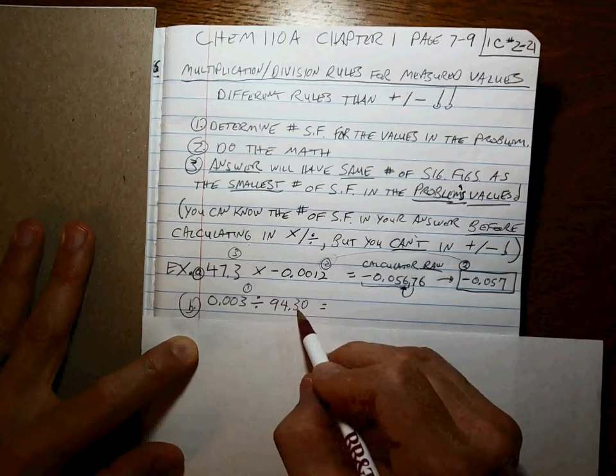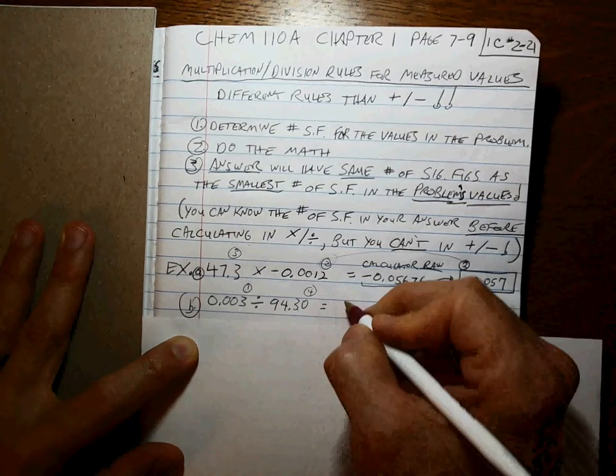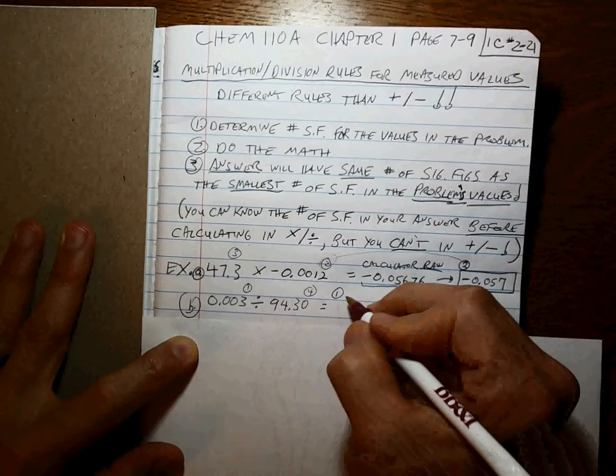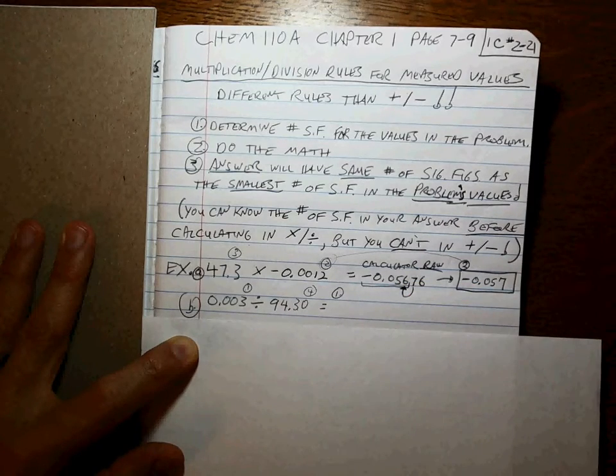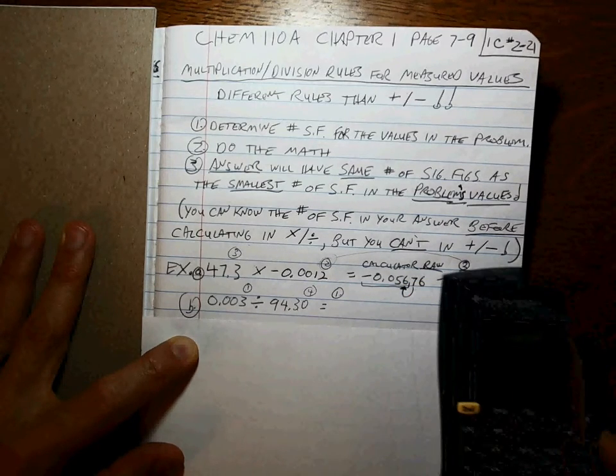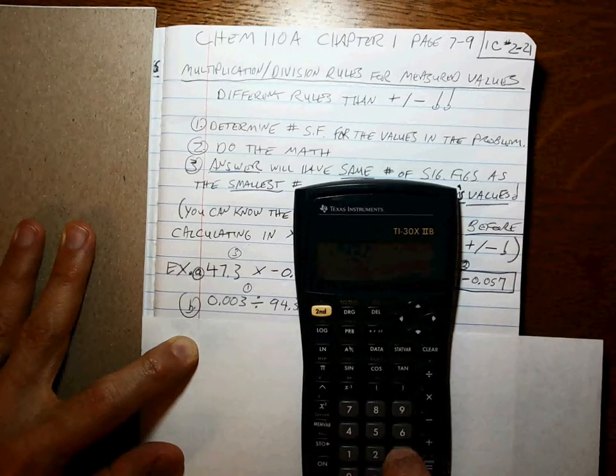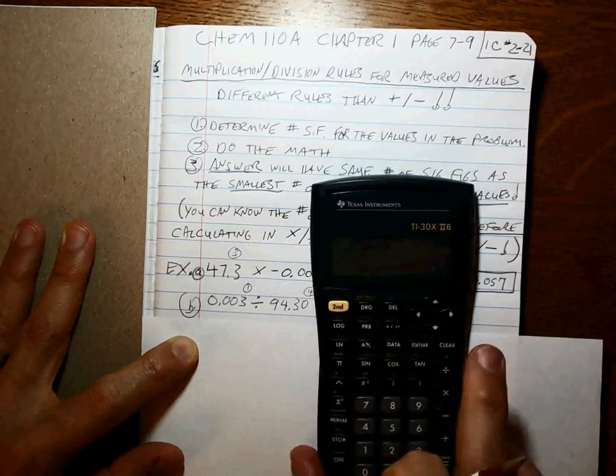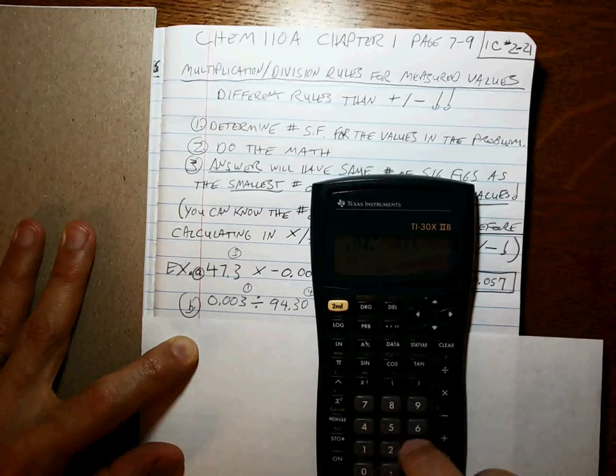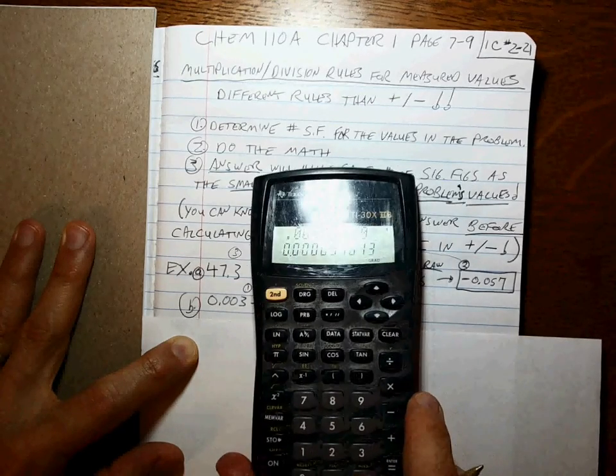Start counting here. This number has 4. So the answer is going to be the least number, which is 1. So now all I have to do is punch it into my calculator. Let's go punching. 0.003 divided by 94.30 equals.